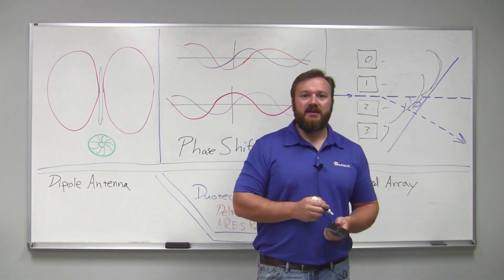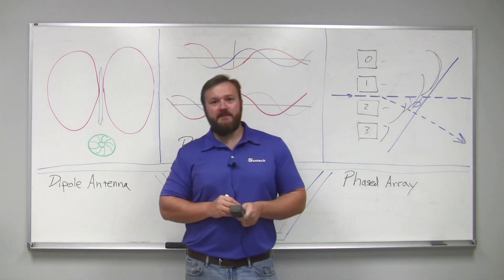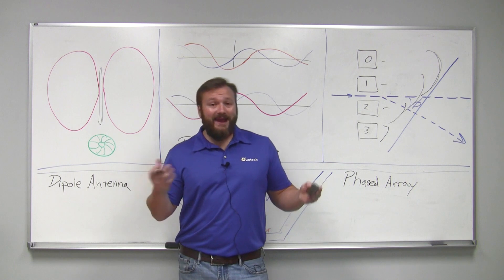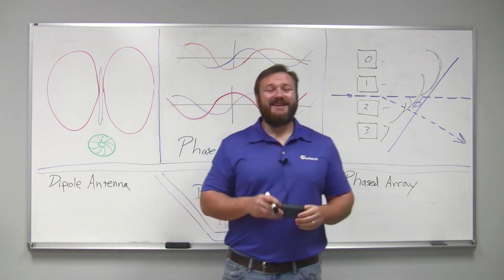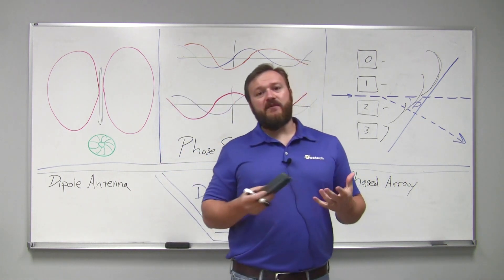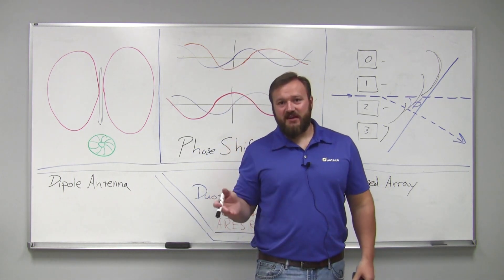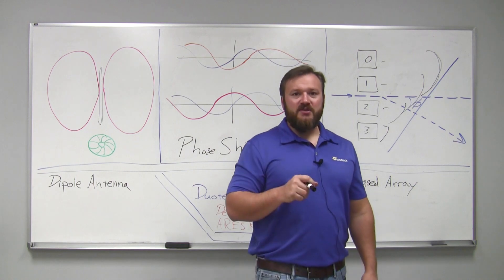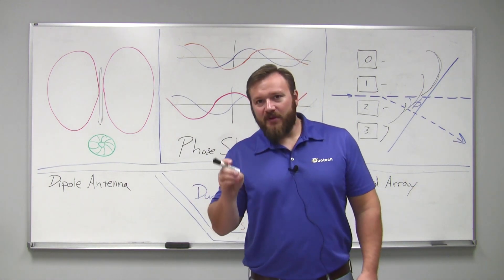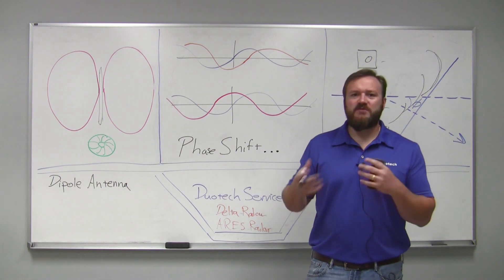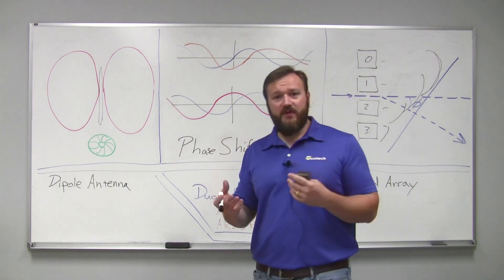Where this comes into practice is this reduces the mechanical complexity. It provides for the shaping of a beam in different ways. Later, we'll talk about active electronically scanned arrays, passively scanned arrays. Mechanically scanned arrays also have great capability in that there are fewer things to go wrong with the electronics, but there's more mechanical complexity.